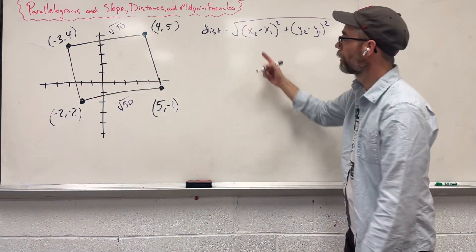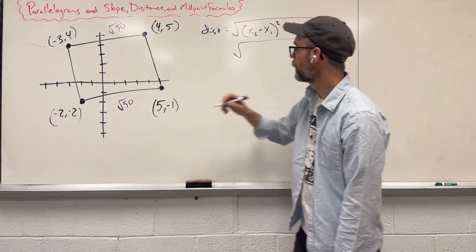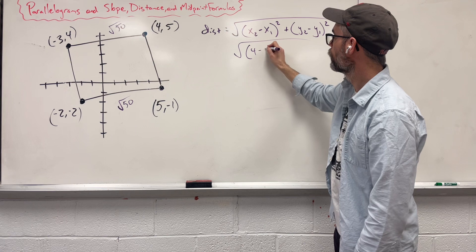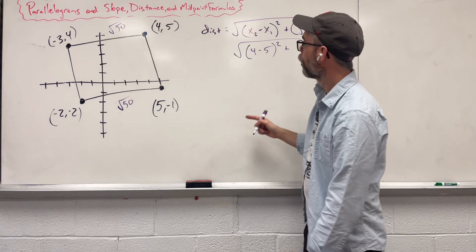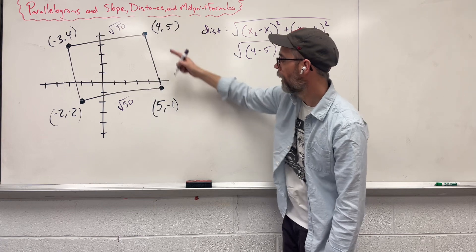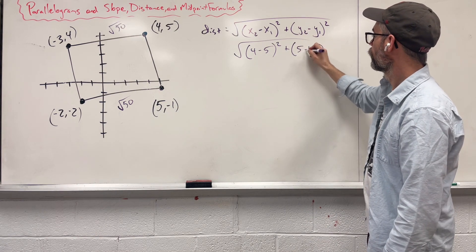First one over here, we're going to look at our x's, we're going to say square root of 4 minus 5, square it, plus our y's, let's go in the same order, 5 minus negative 1, turn that to a plus.